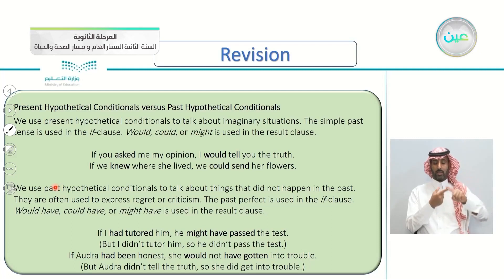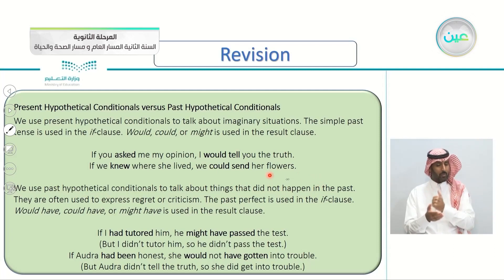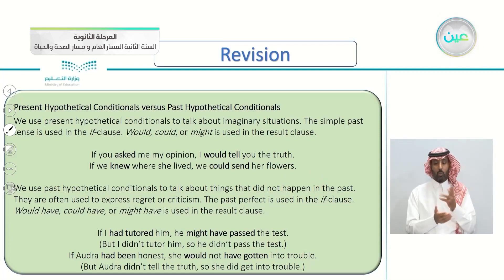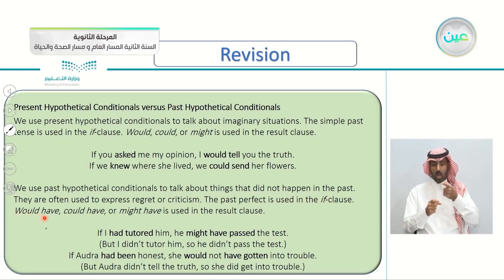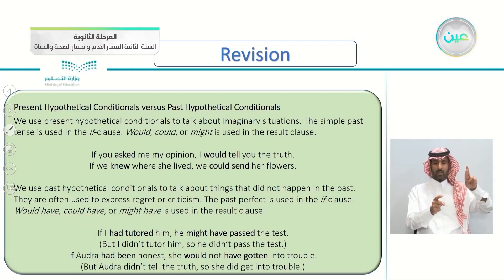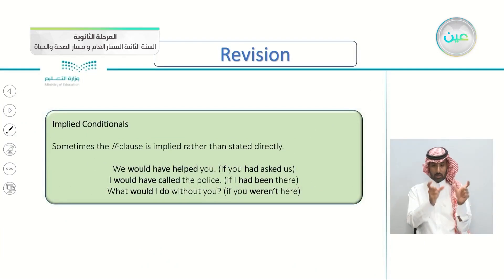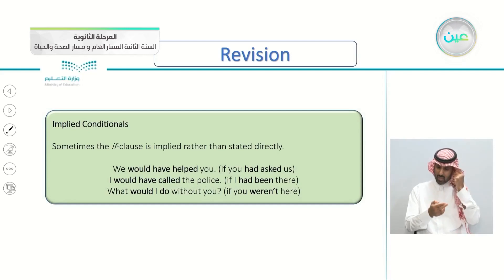On the other hand, in the past hypothetical conditionals, we use it to talk about things that did not happen in the past — things that did not happen. We use it often to express regret and criticism. We use the past perfect in the if clause, and in the result clause we use would have, could have, or might have. And we also learned about implied conditionals — you don't have to say it; it is implied rather than stated directly.